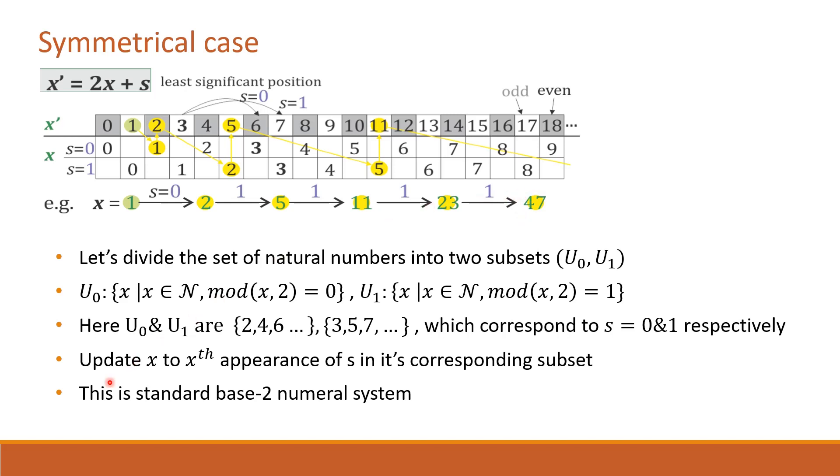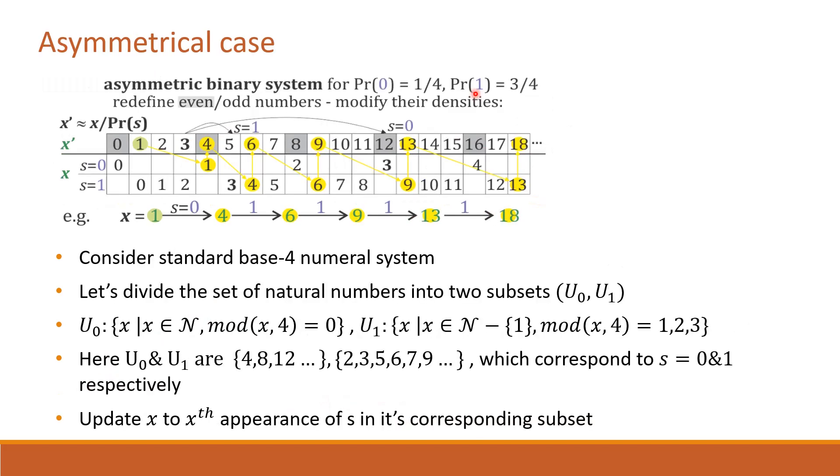The above example we discussed is standard base 2 numeral system. Let us consider the same example with asymmetric probabilities where probability of 0 is given as 1/4 and probability of 1 is given as 3/4. For this case, we use standard base 4 numeral system. We are going to divide natural numbers in a different way.